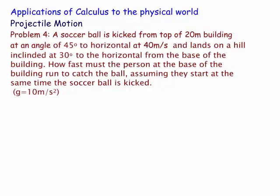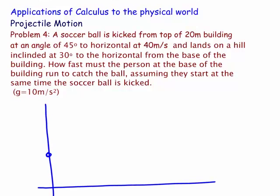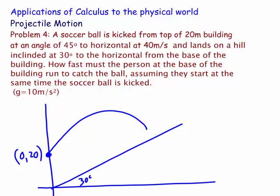Let's draw a picture of what's actually happening. We're up on the building, kicking our soccer ball — that's from 0 to 20. We're kicking at 45 degrees to get the maximum range. Coming out from the base of the building is a plane at 30 degrees — it's an exaggeration — and the ball is going to be landing somewhere on the inclined plane and someone has to run up and try to catch it. If you draw in a right-angle triangle, you have y and x, so it comes down to finding y's and x's, and we'll use Pythagoras to get the distance. We'll probably need the time to get the velocity at which the person needs to run.